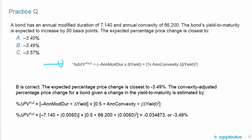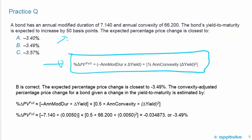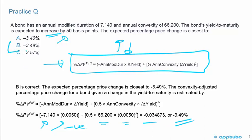This question is very mechanical using the exact same formula. The key thing to note is the yield is expected to increase by 50 basis points, so the change in yield is positive 0.005. That means negative 7.14 times positive 0.005 gives a negative result — unlike the previous question where rates were decreasing, giving a negative times a negative, which was positive. Getting the sign right based on whether rates are increasing or decreasing is the key to this question. The calculation gives negative 0.034873, or negative 3.49%, so the correct answer is B.